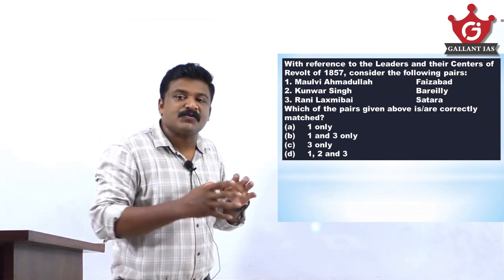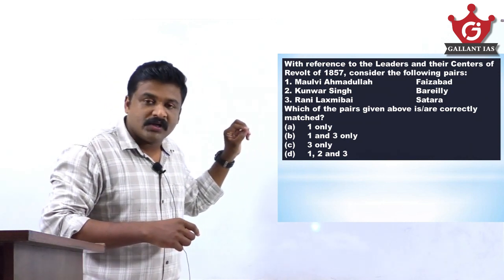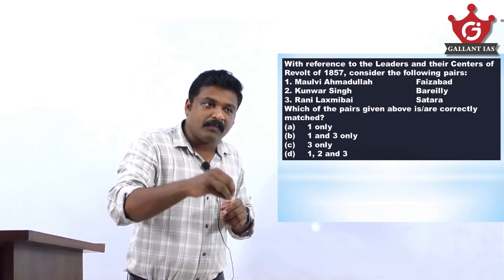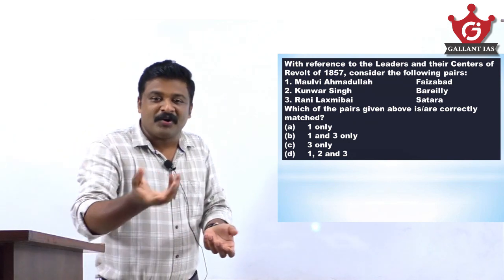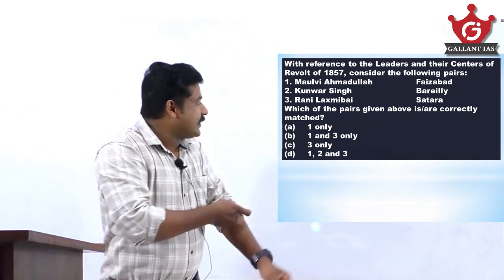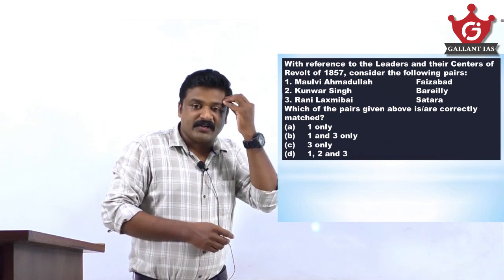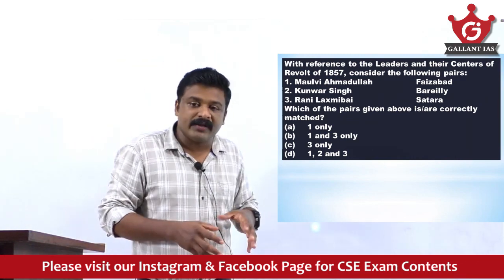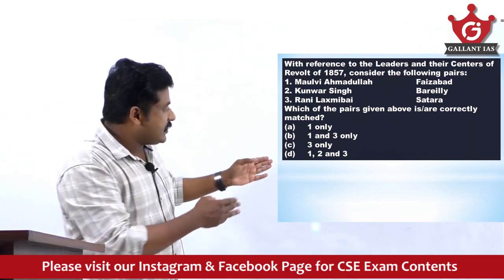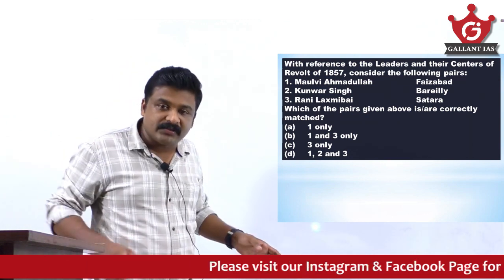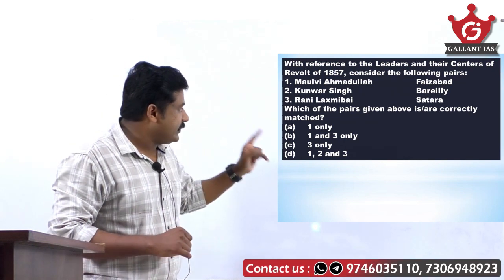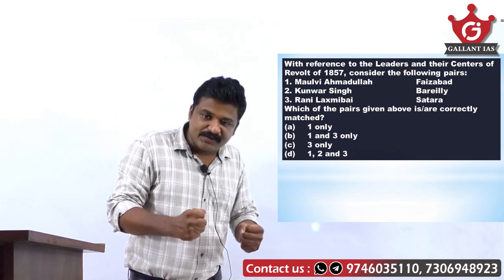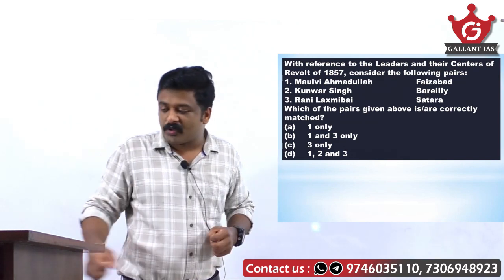There is another question with reference to leaders of the 1857 Revolt and their centers. Consider the pairs — three pairs are given. Maybe you don't know the first and second, but you know the third: Rani Lakshmi Bai. From your childhood days — whether in Balarama magazine or school books — you know Rani Lakshmi Bai is from Jhansi, which is in UP, and she has no connection with Satara or Maharashtra. By knowing the third pair is not correct, you apply elimination. Options B, C, and D are automatically eliminated. The only remaining choice is A — one only is your answer.